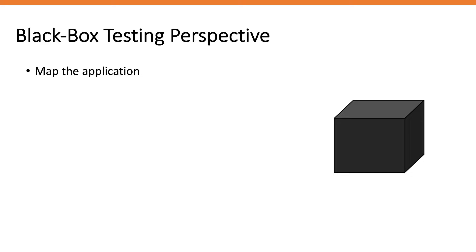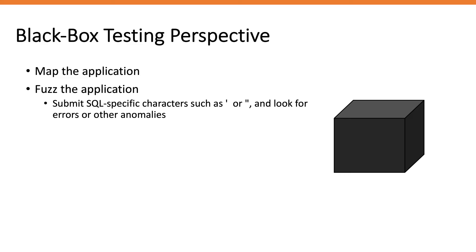Leave automated scanning to the scanners and instead spend time understanding how the application works. Most critical vulnerabilities are logic flaws that a scanner isn't capable of finding on its own, or they're embedded in pages the scanner can't crawl. Once you've mapped the application and listed all input vectors potentially interacting with the SQL database, it's a matter of fuzzing the application with SQL-specific characters — adding special characters in input vectors and seeing if the application responds in an unusual way, then refining your query based on responses until you achieve your end goal.